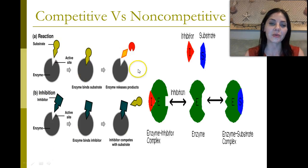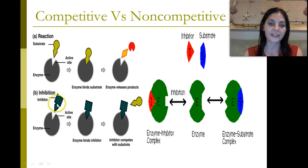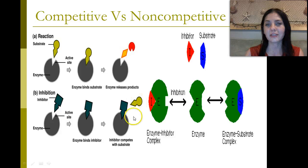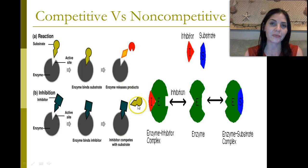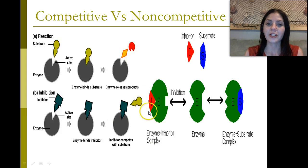Down here we have inhibition, and this is a competitive inhibitor. It has the same shape that will fit into the active site, so it binds with the active site and doesn't let the substrate bind, so the reaction cannot occur. A non-competitive inhibitor changes the shape of the enzyme so that the substrate would no longer be able to fit into it.